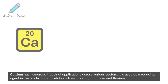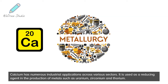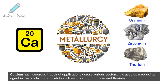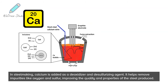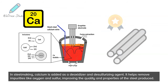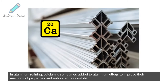Calcium has numerous industrial applications across various sectors. It is used as a reducing agent in the production of metals such as uranium, zirconium, and thorium. In steelmaking, calcium is added as a deoxidizer and desulfurizing agent. It helps remove impurities like oxygen and sulfur, improving the quality and properties of the steel produced. In aluminum refining, calcium is sometimes added to aluminum alloys to improve their mechanical properties and enhance their castability.